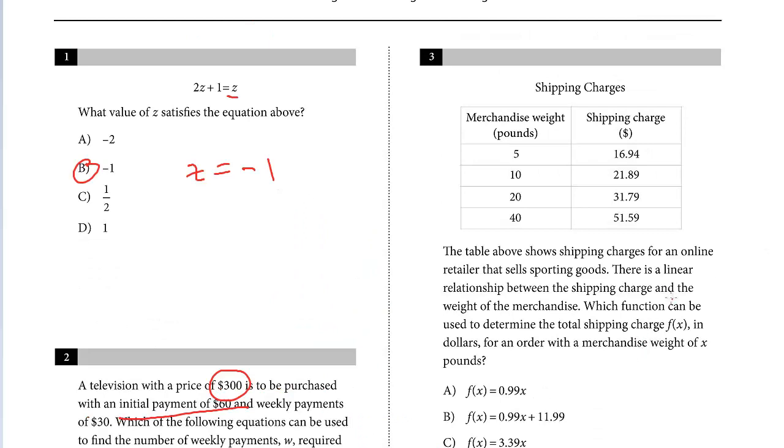Let's take a look at the third one. The table above shows shipping charges for an online retailer that sells sporting goods. There is a linear relationship between the shipping charge and the weight of the merchandise. Which function can be used to determine the total shipping charge f(x), in dollars, for an order with a merchandise weight of x pounds? Just like the last question, we know this is linear.